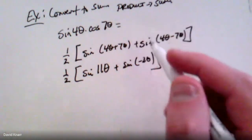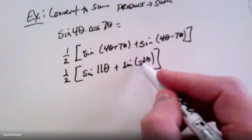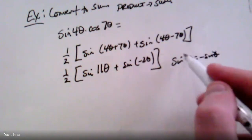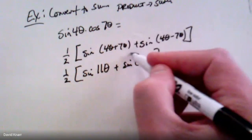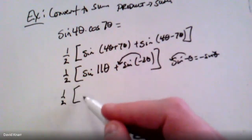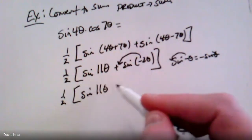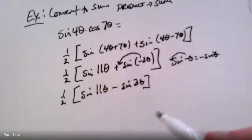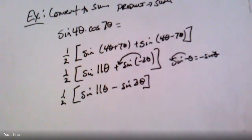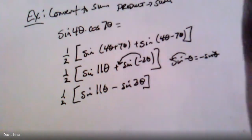Again we apply even/odd properties: sine is an odd function, so sin(−θ) = −sin(θ), meaning the negative comes outside the sine. So the final answer is (1/2)[sin(11θ) − sin(3θ)]. That's converting from a product to a sum — in this case a difference, because of that negative. That's your final answer.